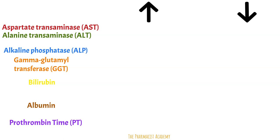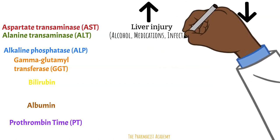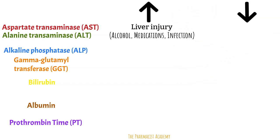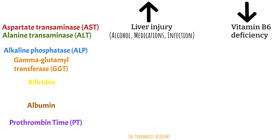An increase in the AST and/or ALT is a sign of liver injury, which can be due to alcohol, medications, or an infection. The severity of the injury depends on how high the numbers are, and this can also help determine if it's more acute or chronic. A patient with a Tylenol overdose will have a much higher level of these enzymes than one with long-standing chronic hepatitis. Also, because AST is found in other organs, mild elevations may be due to injury in those organs. Low AST and ALT levels are uncommon and usually considered normal, but if you do see this, it can be due to a deficiency in vitamin B6, which is needed for these enzymes to function.